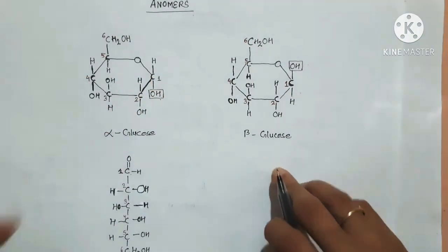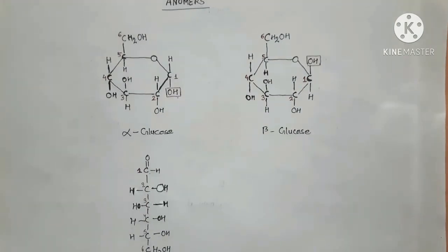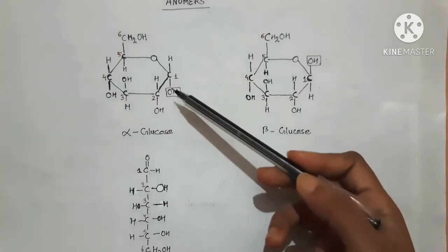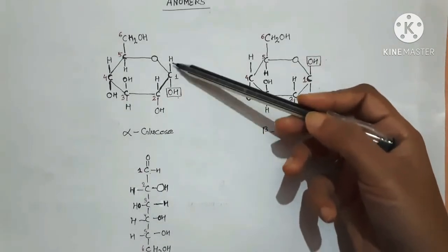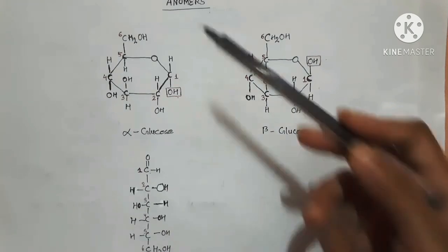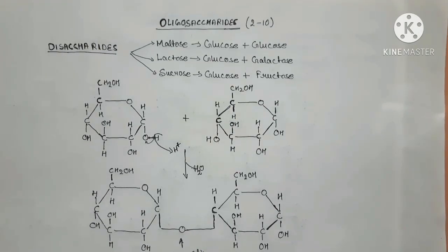So if the C1 hydroxyl group and C6 are in the same plane, that is beta glucose. As you can see, the structures of alpha and beta glucose differ at carbon 1 — the anomeric carbon — due to the difference in arrangement of the hydroxyl group and H atom at the C1 position. Therefore alpha glucose and beta glucose are anomers of glucose and are classified as stereoisomers, which have the same chemical formula but differ in spatial arrangement.